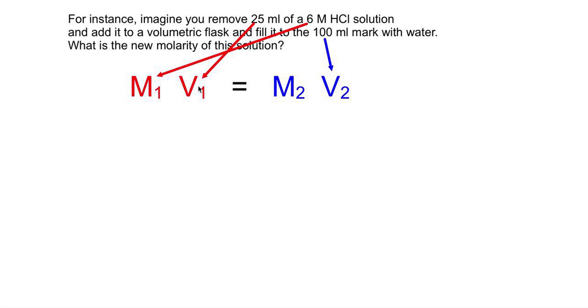We're going to start with the numbers that deal with the stock solution or our strong stuff. So our 6 goes under the M1. That's the molarity of the original solution. And we're only going to dilute 25 milliliters of it.